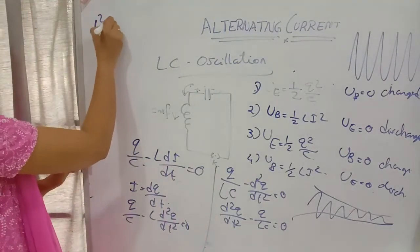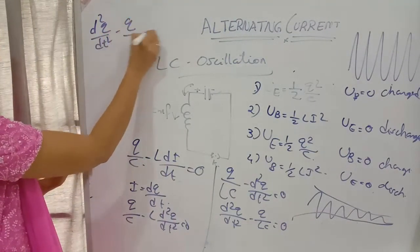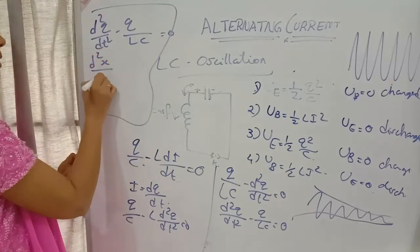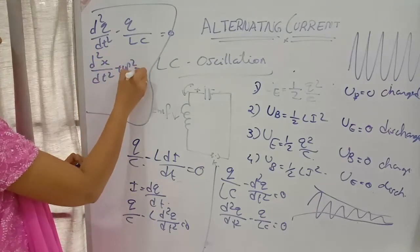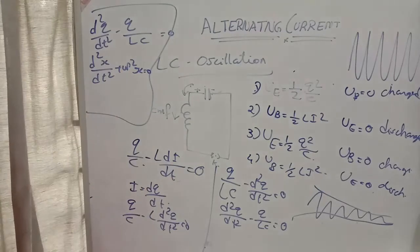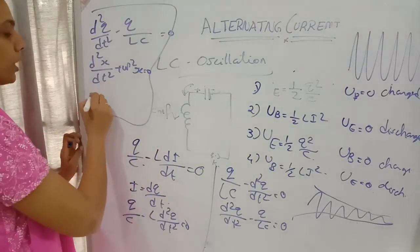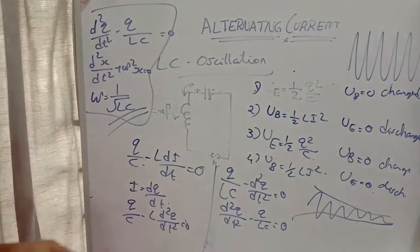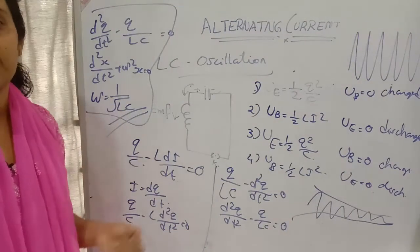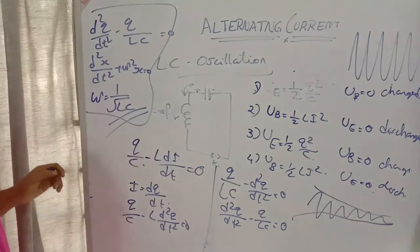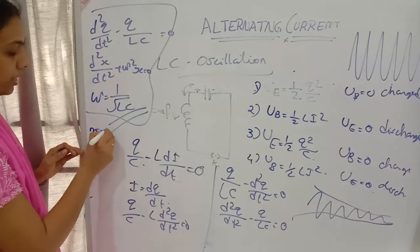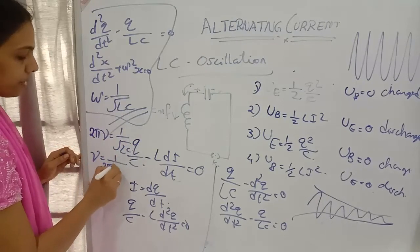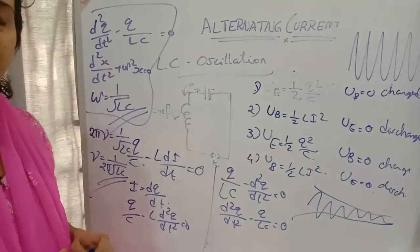This equation d²q/dt² minus q/LC equals zero is analogous to d²x/dt² plus omega squared x equals zero. Comparing the two equations, omega equals 1 by root LC. Since omega equals 2 pi times nu, therefore the frequency nu equals 1 by (2 pi root LC).